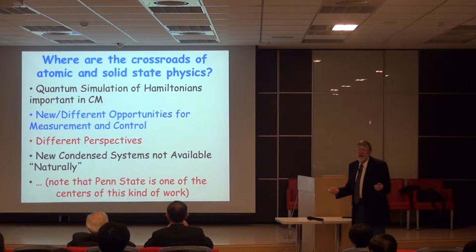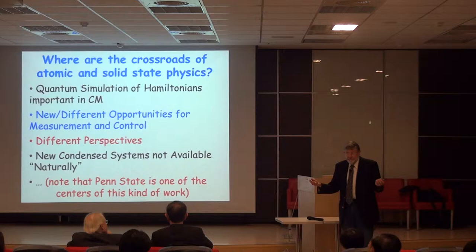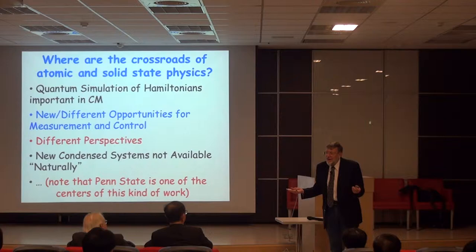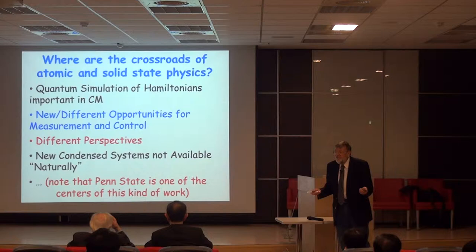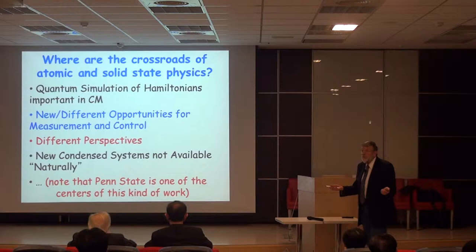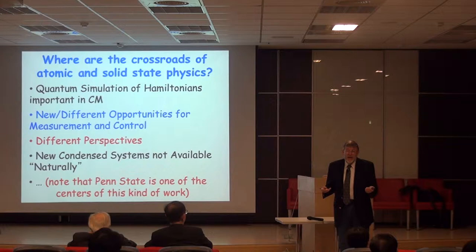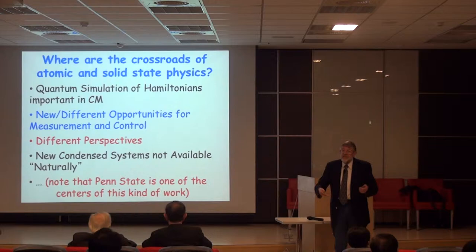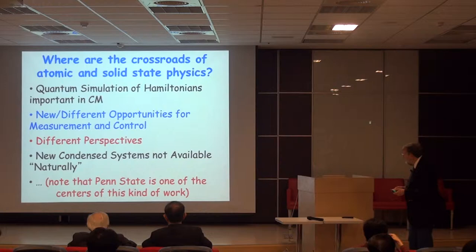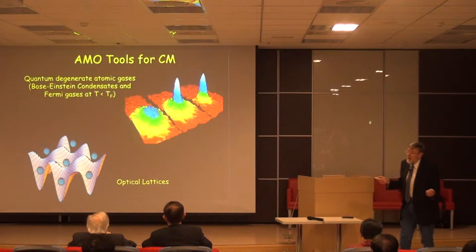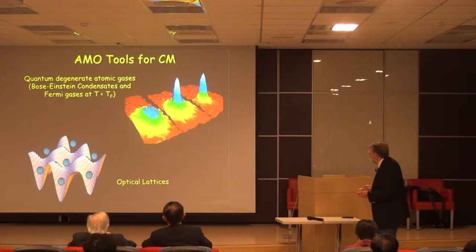There are condensed systems not available to us naturally. When studying electron mobility, electrons are fermions — that's the only kind. But atoms playing the role of charge carriers can be either bosons or fermions, giving an extra degree of freedom. Electrons have two spin states, whereas atoms can have as few as zero or as many as ten or more spin states, allowing for a much richer variety of experiments with cold atoms.